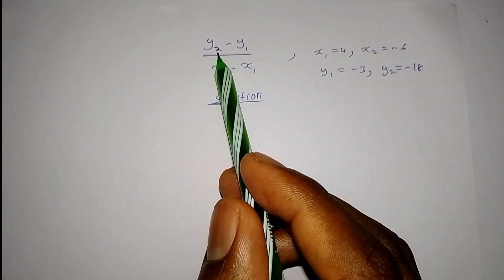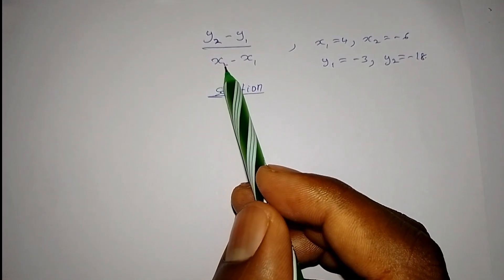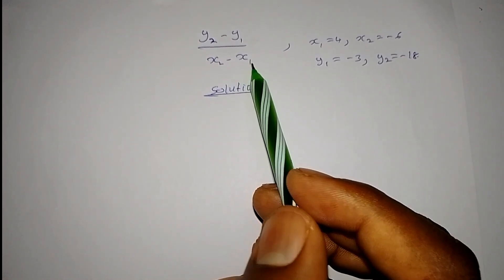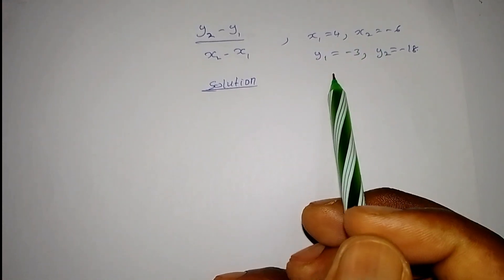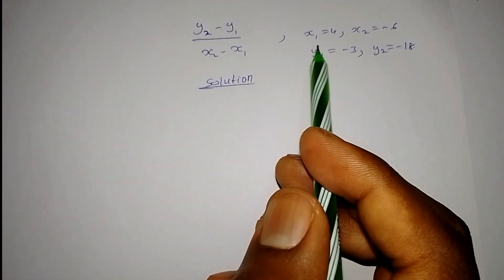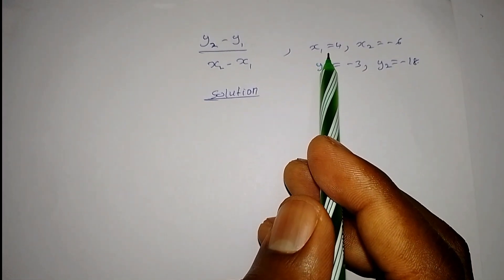We are given (y2 - y1) divided by (x2 - x1), and we've been given the values for x1, x2, y1, and y2, where x1 equals 4.